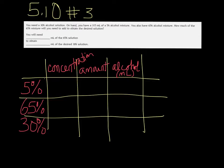So you have 315 milliliters of the 5%. We don't know how much of the 65% we need to add. But in the end, if you add those together, you'll have 315 plus x. The amount you add of the 5% to the amount of the 65% added together, that's your total amount.